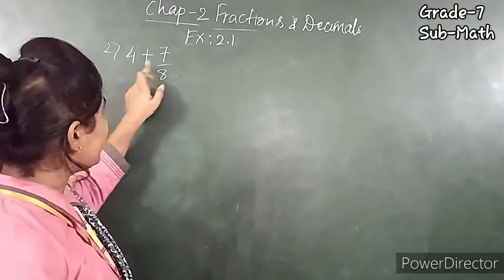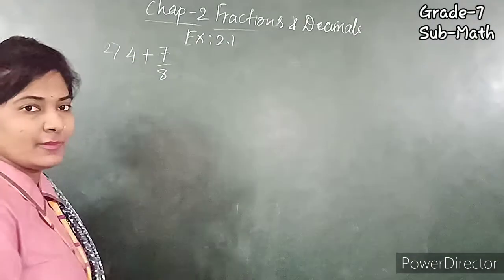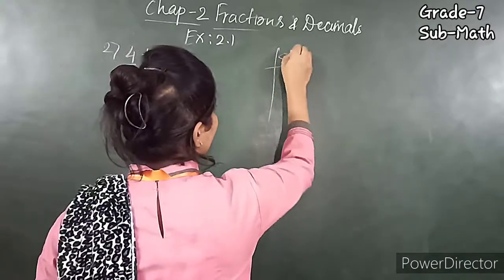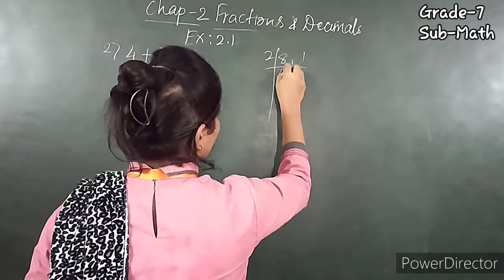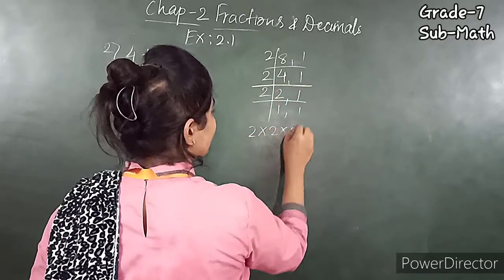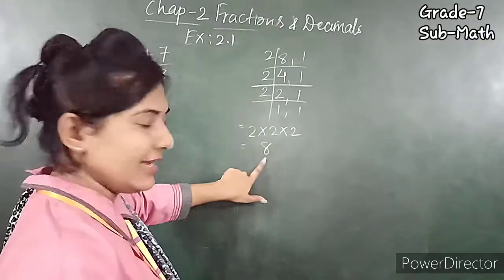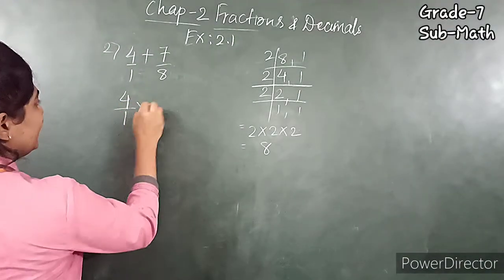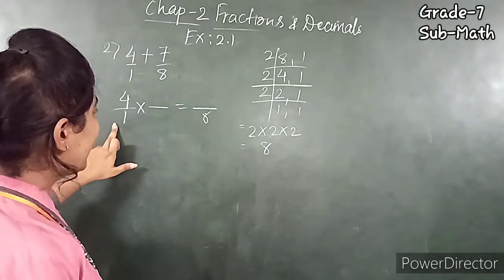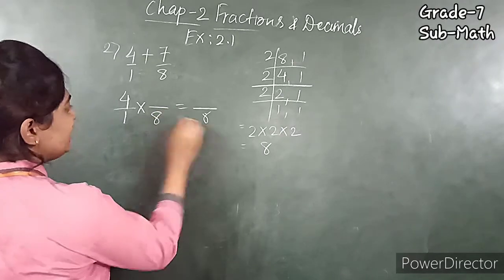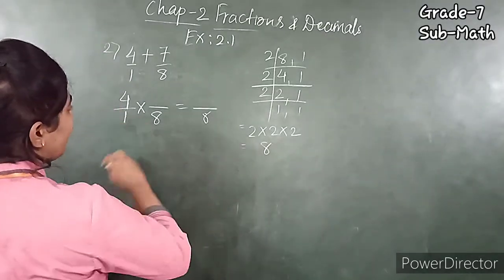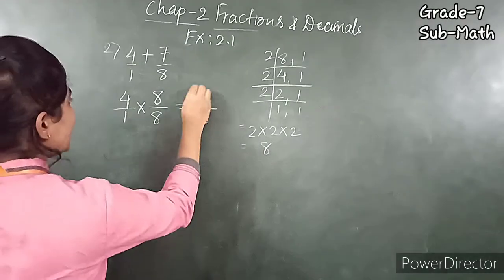Another question is 4 plus 7 upon 8. Here also the whole number 4 has no denominator, so we write 1. We take the LCM of 1 and 8, which is 8. For 4 upon 1: multiply the denominator by 8 to get 8, so multiply the numerator 4 by 8, giving 32. For 7 upon 8: multiply the denominator by 1 to get 8, so multiply the numerator 7 by 1, giving 7.